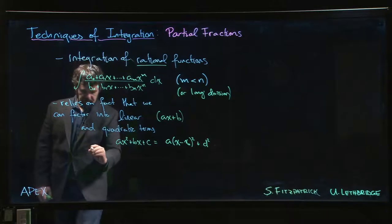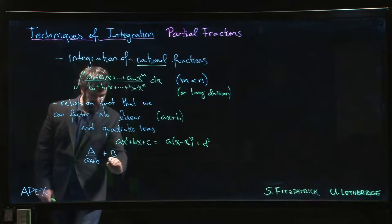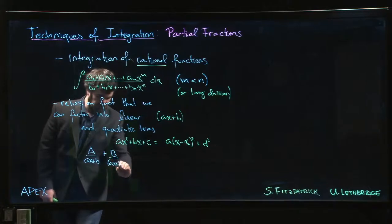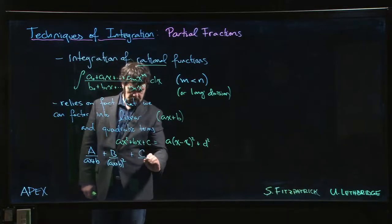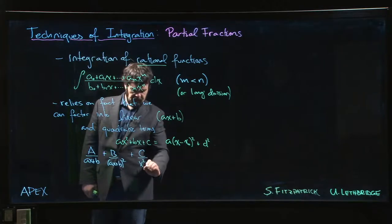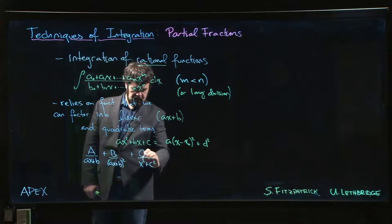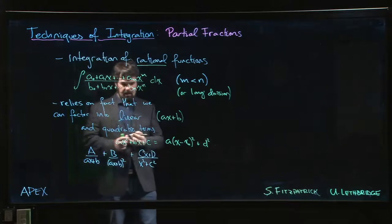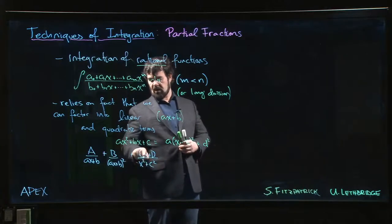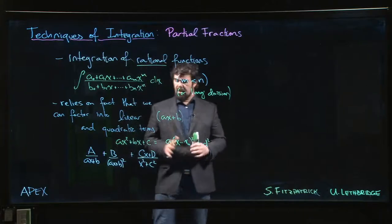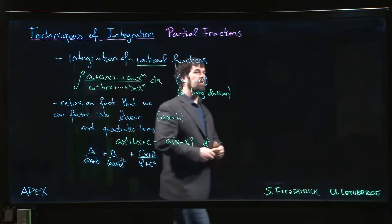We want to split it up into terms that look like some constant over ax + b, or maybe some other constant over a repeated factor like (ax + b)². And we might have an irreducible quadratic like x² + c². It turns out that the numerator might look like cx + d for a quadratic denominator because we want to make sure that the degree of the numerator is less than the degree of the denominator. We want to split things up into terms like this because we know how to integrate them.